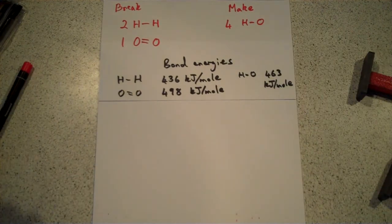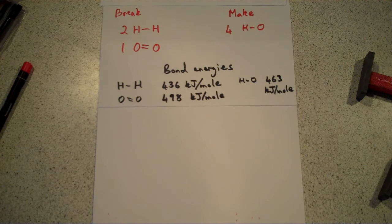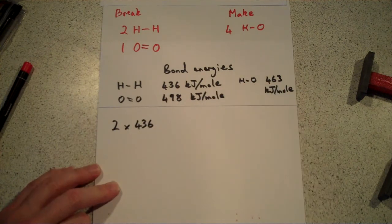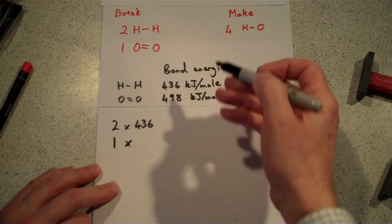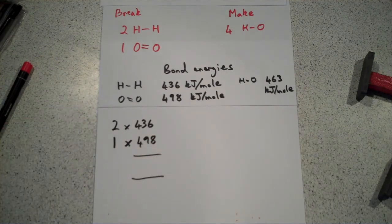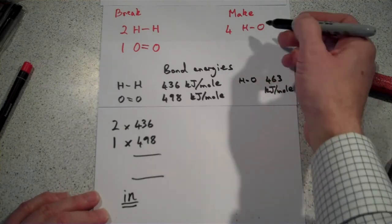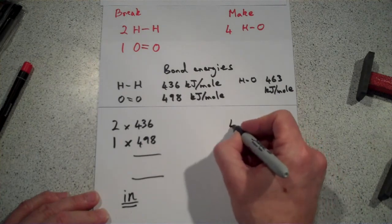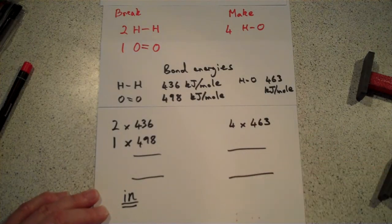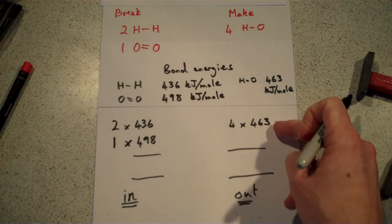Now, to get our calculation correct, we need to remember how many bonds we're making and breaking. And at the top, you see I said we're breaking two H-H bonds. So, we're breaking two lots of bonds that take 436 kilojoules to break. We're also breaking one lot of oxygen-oxygen double bonds here. And they take 498 kilojoules of energy. And those are all the bonds we break. And that's the energy we're putting in, the endothermic part. What about bonds we're making? As you see at the top, we're making four H-O bonds. Four bonds that, if we were breaking them, would take 463 kilojoules. Now, we have to do a bit of maths to work out how much energy we're putting in and how much energy we're putting out. These bonds are being made, so it's energy out.